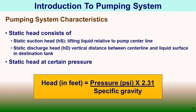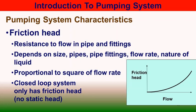Static discharge head is the vertical distance between the pump centerline and the surface of the liquid in the destination tank. Static head at a certain pressure depends on the weight of the liquid and can be calculated as: head in feet = pressure in psi × 2.31 / specific gravity of the liquid. Friction head is the loss caused by resistance to flow in the pipe and fittings, depending on size, condition, type of pipe, number and type of fittings, flow rate, and nature of liquid. It is proportional to the square of the flow rate.